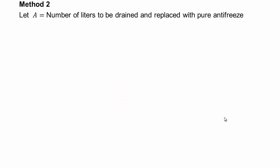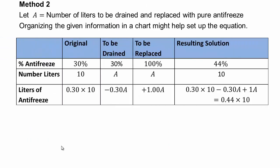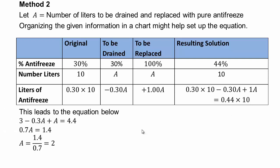Now let's do this algebraically. Let A be the number of liters to be drained and replaced with pure antifreeze. Organizing the chart: original is 30% of 10 liters. You drain 0.30A of antifreeze and replace with 1.00A of pure antifreeze. The resulting solution must be 44% of 10 liters. So the equation is: 0.30 times 10 minus 0.30A plus 1.00A equals 0.44 times 10. Solving for A gives 2 liters — the same answer as the visual method.